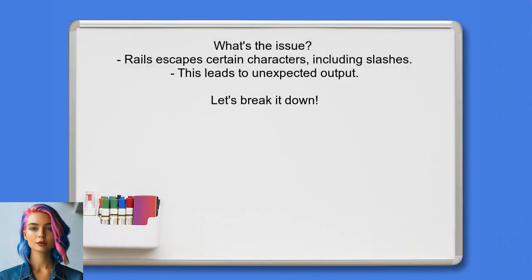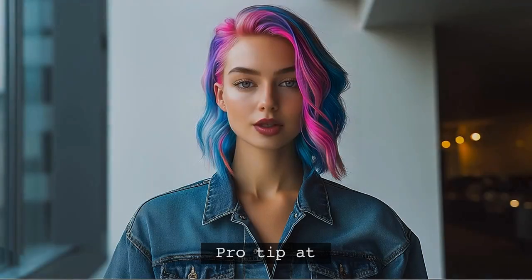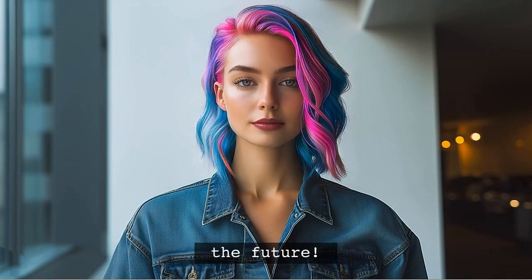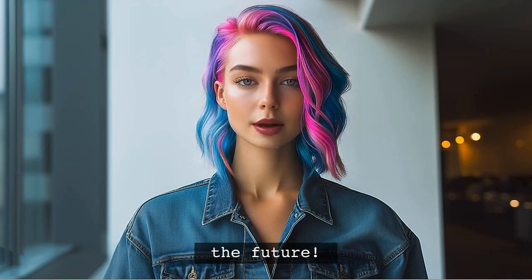So what's the issue here? When you try to render JSON in Rails, it automatically escapes certain characters, including slashes. This can lead to unexpected output that doesn't meet your requirements. Let's break down the problem and find a way to achieve the desired format. And stick around — at the end of this video, I'll share a pro tip that will help you avoid similar issues in the future. You won't want to miss it.